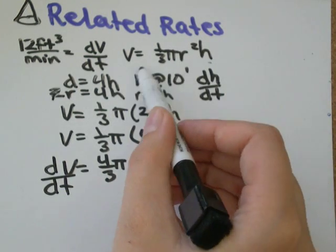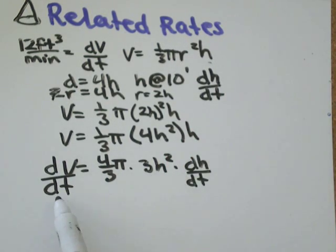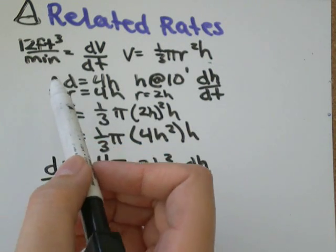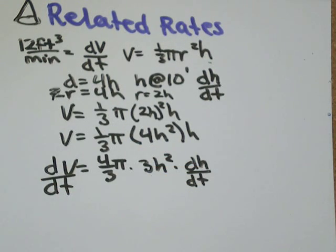We know h. h is when we're at 10 feet. And we know dv dt. It was 12 cubic feet per minute. So all we need to do is plug in everything we know into the formula and solve for the one unknown we're going to have.